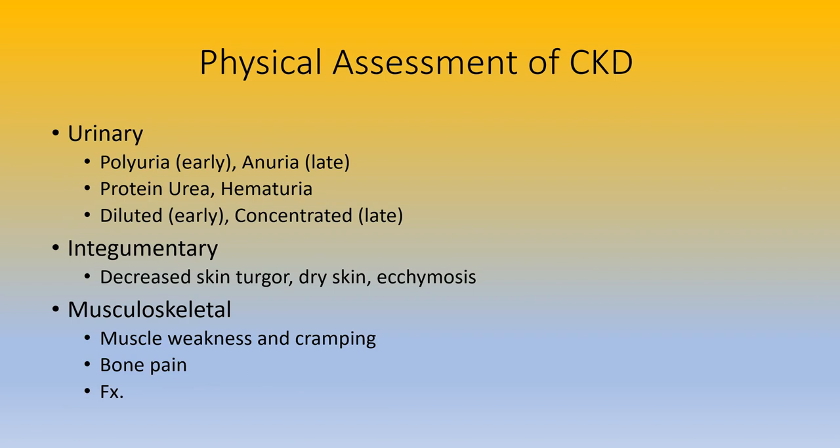Urinary problems in chronic kidney disease: in early stages, polyuria occurs as the body tries to get rid of fluid. Over time, with damage and fluid backup, oliguria develops. Protein in the urine appears because the kidneys aren't functioning correctly, causing further damage. Urine becomes concentrated as the kidneys fail to dilute toxins. Integumentary: decreased skin turgor, dry skin, and ecchymosis due to dehydration. Musculoskeletal: muscle weakness and cramping, bone pain, and possibly fractures from sodium, potassium, and calcium electrolyte imbalances.